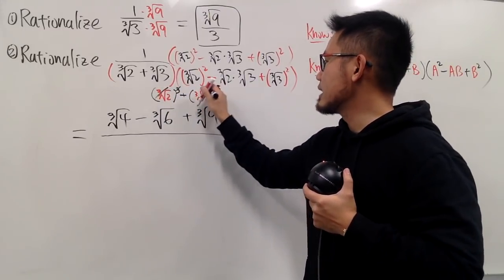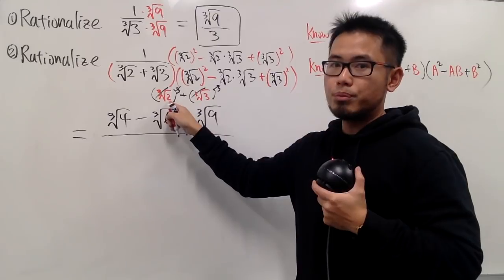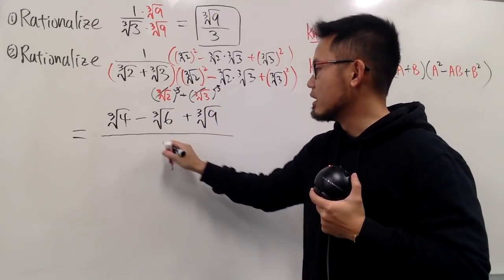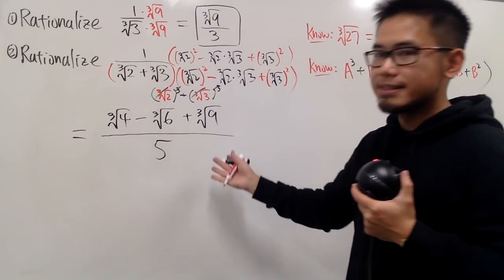So, this cancels, this cancels, we just have 2 plus 3 on the denominator. Then we just have a nice number, 5.